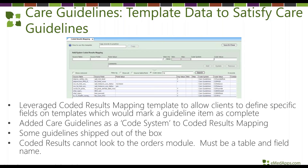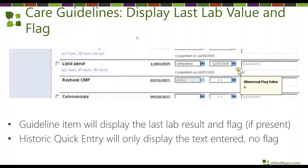The second big enhancement is template data to satisfy care guidelines. We've never had the ability to pick template fields to satisfy care guidelines — previously it had to be a code type situation such as a procedure code, screening tool description, or test code. Now Next Gen has given us the ability to satisfy care guidelines based on template fields and documentation, which is very exciting new functionality.